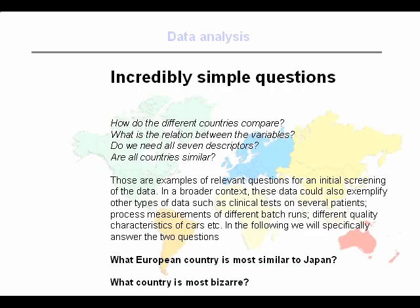When we have a dataset like this, we want to figure out how all the different variables and all the different samples compare to each other. How do different countries differ? What variables are related to each other? What samples are related to what variables? Some very simple questions one could ask would be: what European country is most similar to Japan? What country is the most unusual one? These are very simple questions, but they're difficult to answer from the raw data.